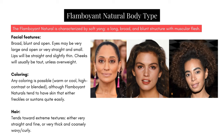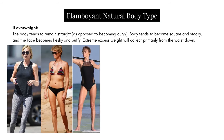Hair tends toward extreme textures — either very straight and fine, or very thick and coarsely wavy or curly. If overweight, the body tends to remain straight rather than becoming curvy, becoming more squarish and stocky. The face becomes fleshy and puffy, and extreme excess weight collects primarily from the waist down. Most Flamboyant Naturals are characterized by an athletic build and prominent bone structure, without a defined waist, and as they thicken that broad midsection creates a rectangular shape.